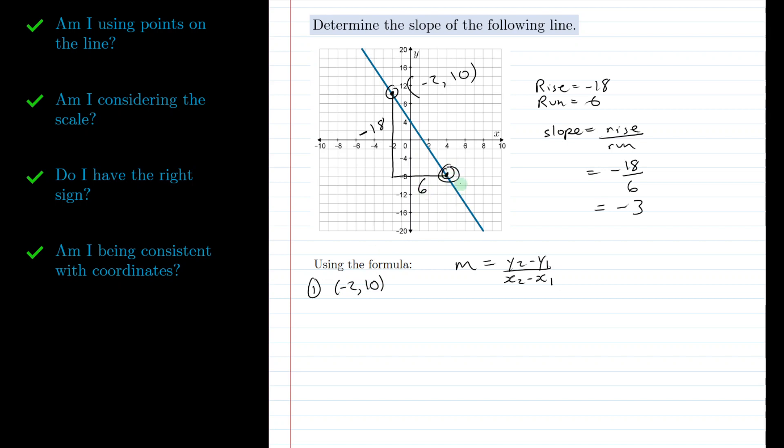And our other point right here was (4, -8). I'll call that point 2. Now it doesn't have to be that (-2, 10) is point 1 and (4, -8) is point 2. We could switch these labels. It wouldn't matter as long as we're consistent.